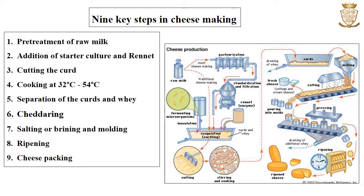Essentially, there are nine key steps in cheese making. They are: pre-treatment of raw milk; addition of lactic acid starter culture bacteria and coagulant rennet; coagulation of the milk followed by cutting of the curd; cooking the curd to temperatures from 32 to 54 degrees Celsius, which together with the acid production by the microorganisms assists in the expulsion of whey from the curd; and separation of the curds and whey.